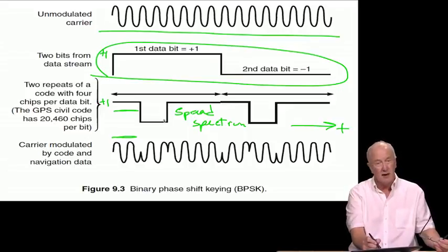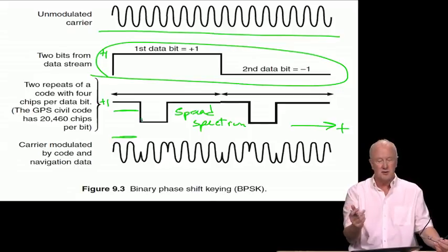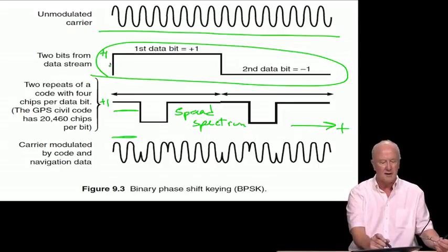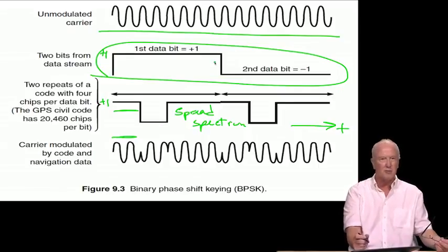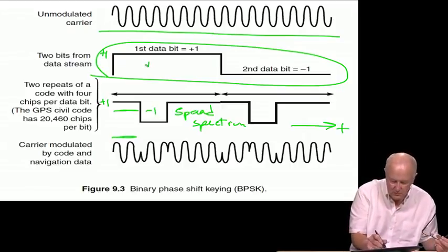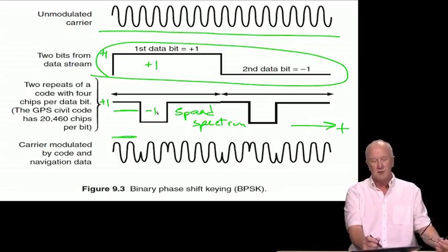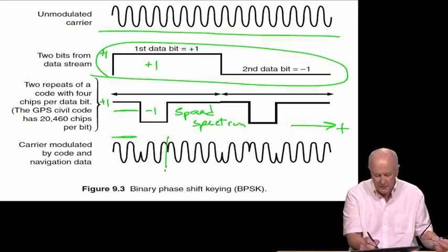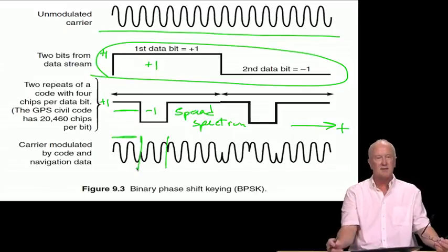Now the code has switched to a minus one. The code is much more rapid than the navigation data. So it's much more likely to flip back and forth many times while the navigation data bit remains either at plus one or minus one. Now we have minus one for the code, plus one for the nav data. Minus one times plus one is minus one. And so the carrier, if you look down here, has had that switch in polarity.